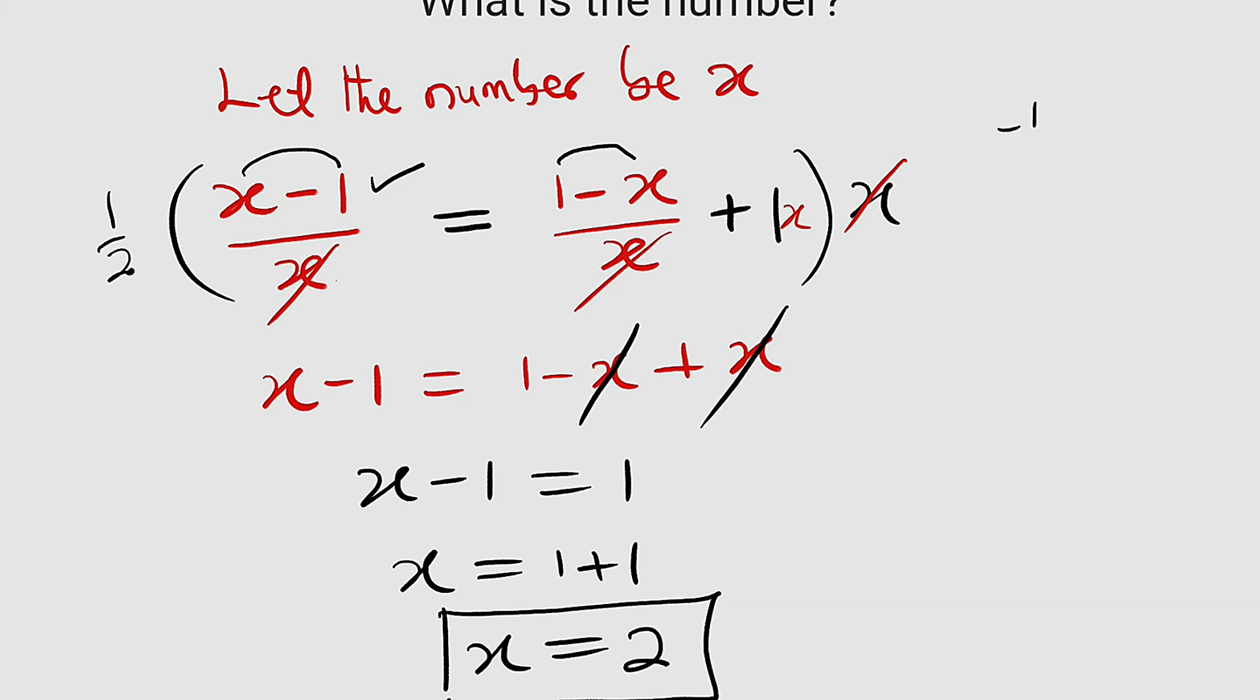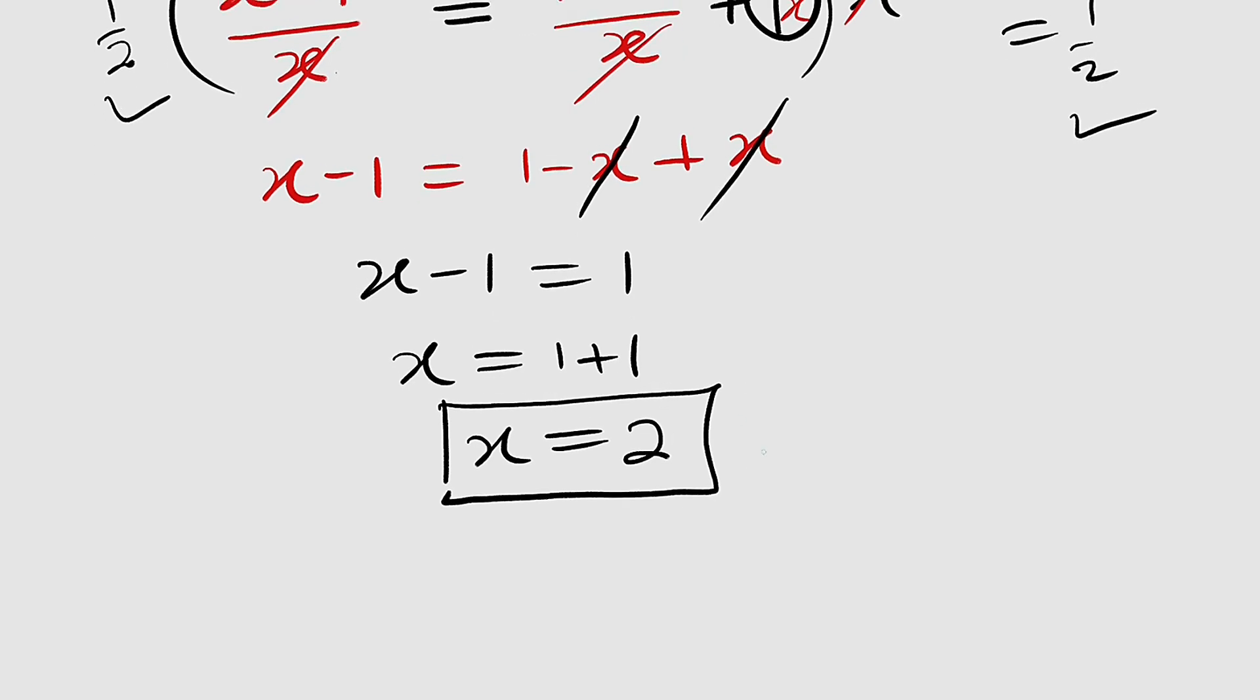And here we have 1 minus 2 is negative 1 divided by 2. You can see we have negative 1 over 2, but we have plus 1 here. If you add 1 here, you're going to get 1 over 2. So the left-hand side is 1 over 2 and the right-hand side is 1 over 2. And hence we say that the real solution is x equal to positive 2.